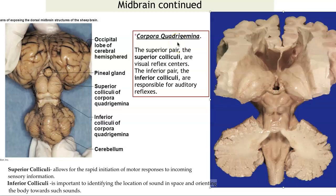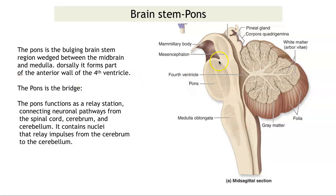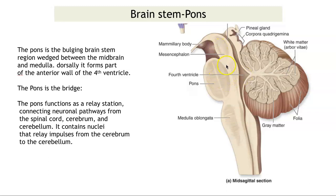Those are the corpora quadrigemina — the only things you really need to know in the midbrain, other than the cerebral aqueduct where CSF is flowing. On to the pons — this pregnant pons. All you really need to know: pons is the bridge. It is a bridge between the medulla oblongata and the spinal cord below it, a bridge between the midbrain and the cerebrum above it, and a bridge to the cerebellum, which is posterior to it. So it has a lot of nerve fibers communicating with all these areas.